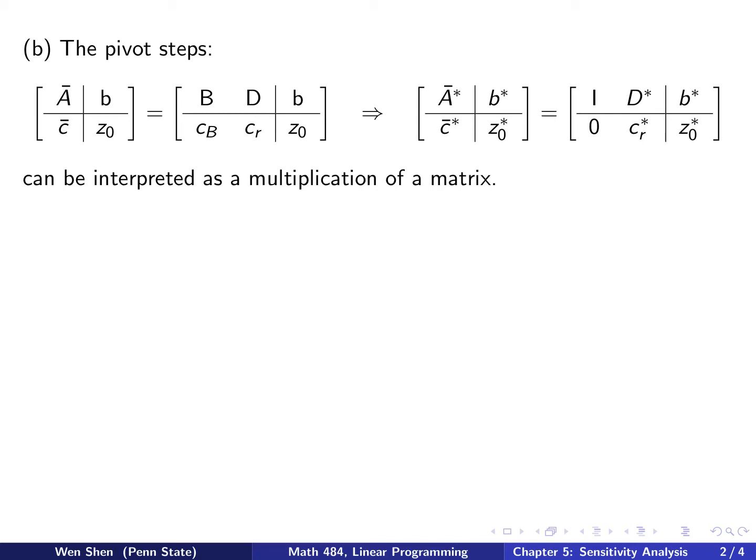Now let's look at the pivot steps. The pivot steps take a form like this: A-bar, c-bar, the rearranged one, which is [B|D] and cB, cr. And the pivot step changed this into the final form, which we call A-bar star, b star with all stars. A-bar star has the identity part here and has the part zero here.